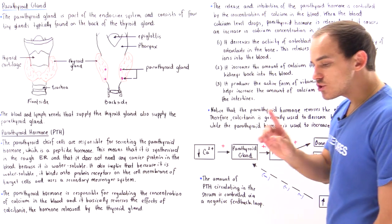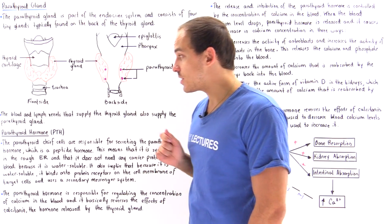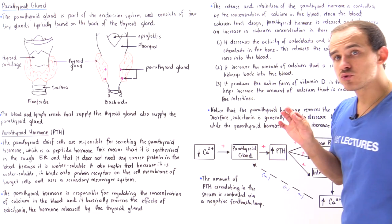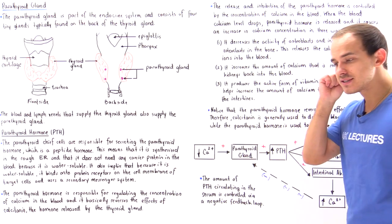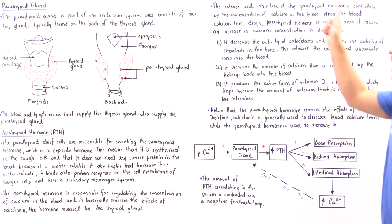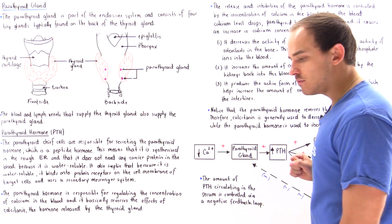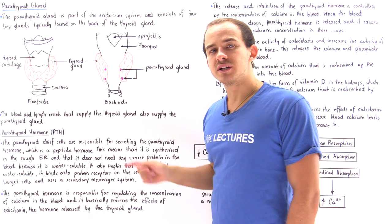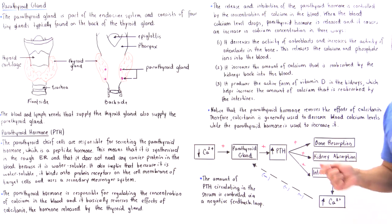The release or inhibition of the parathyroid hormone is controlled by the concentration of calcium inside our blood. When the blood calcium level drops and is relatively low, the parathyroid gland releases the parathyroid hormone.